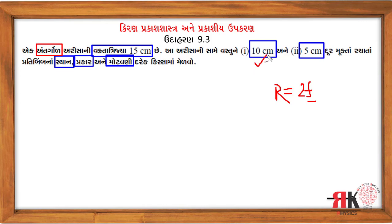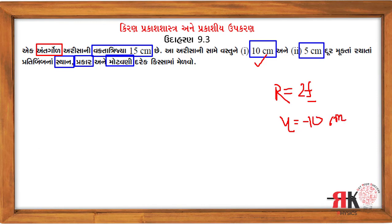પ્રથમ કિસ્સા માટે વસ્તુ અંતર આપણને આપ્યું છે: u = -10 સેન્ટિમિટર. ઉપરના સૂત્ર પ્રમાણે આપણને F મળ્યું છે.